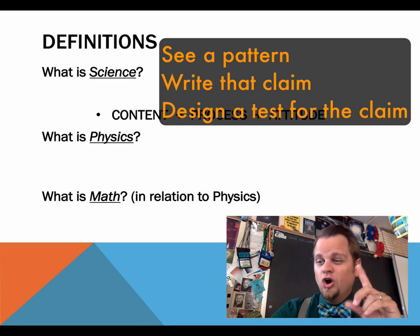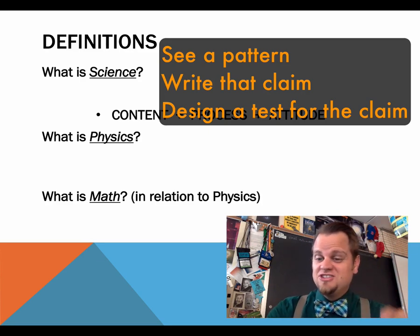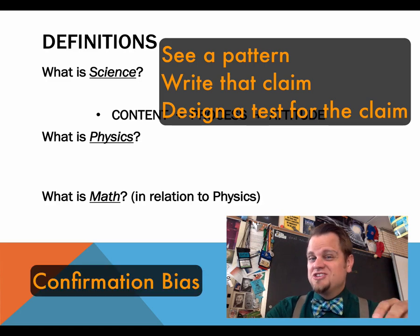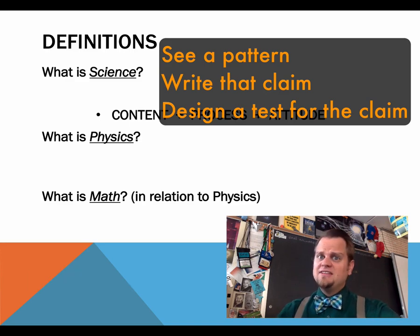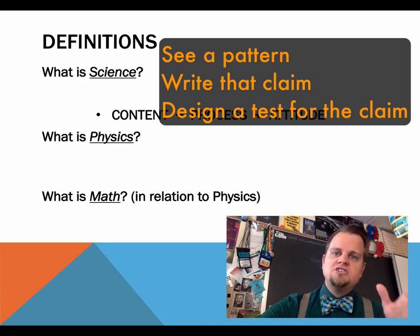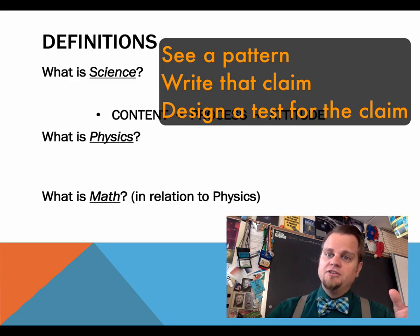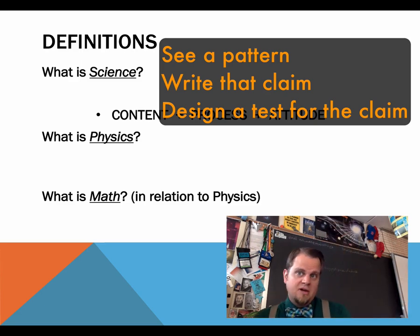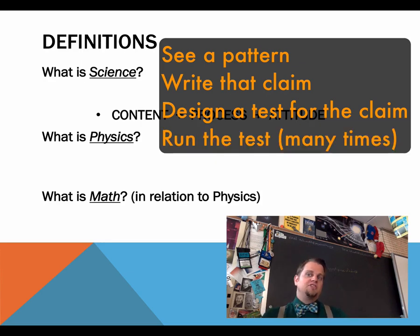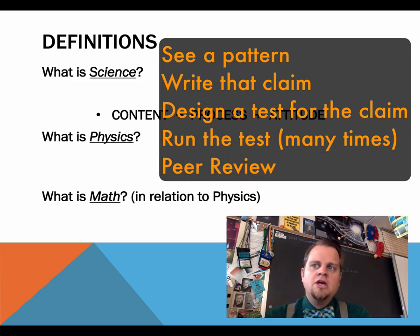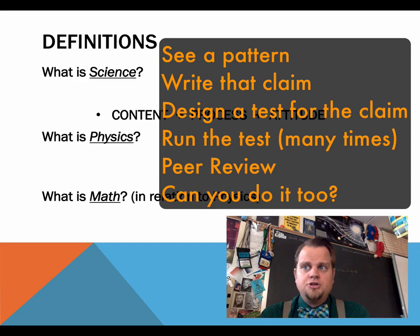Remember, only finding the times when your hypothesis is correct or is supported is known as confirmation bias, and it pretty much leads to being wrong unnecessarily. Now, about that test. The test must measure the effect of one thing on another, and it has to control for anything else in the world that might change the outcome. You run the test as many times as necessary to have a reasonable amount of confidence. And then you ask others to peer review your work and also reproduce your results.